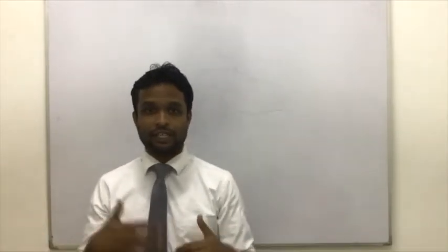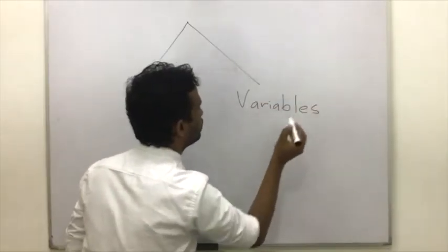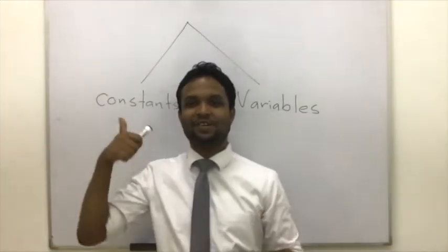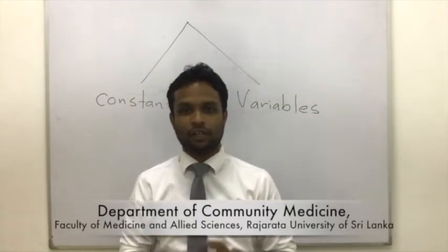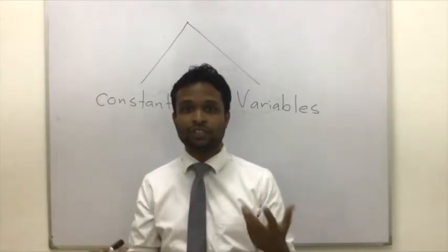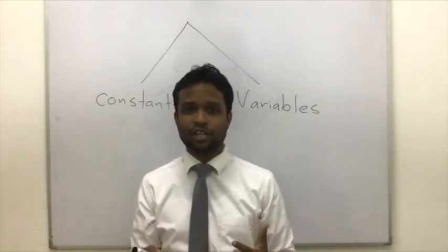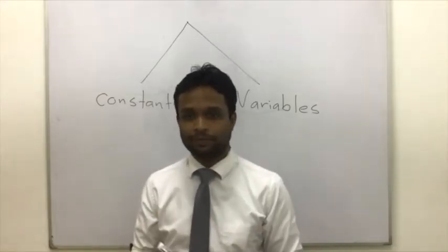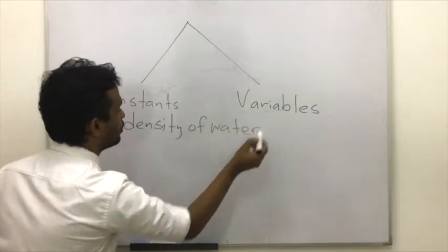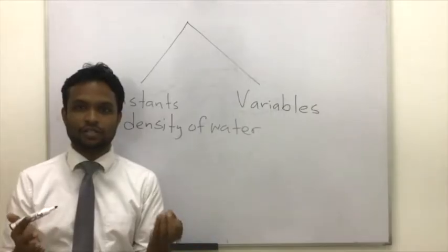There are two types of things in statistics: variables and constants. Everything, as I mentioned, can be a variable, but there are constants which do not change over time. For example, the density of water is a universal constant.